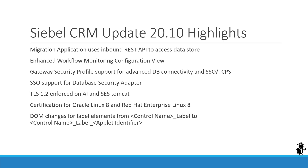The other highlights — with no slides — include the certification update: you can look up the certification tab on My Oracle Support to verify that Siebel CRM now officially runs on Oracle Linux 8 or Red Hat Linux 8. The DOM change for label elements likely won't affect you unless you have OpenUI scripting that interacts with labels — if so, add an item to your post-update to-do list. Thank you and goodbye.